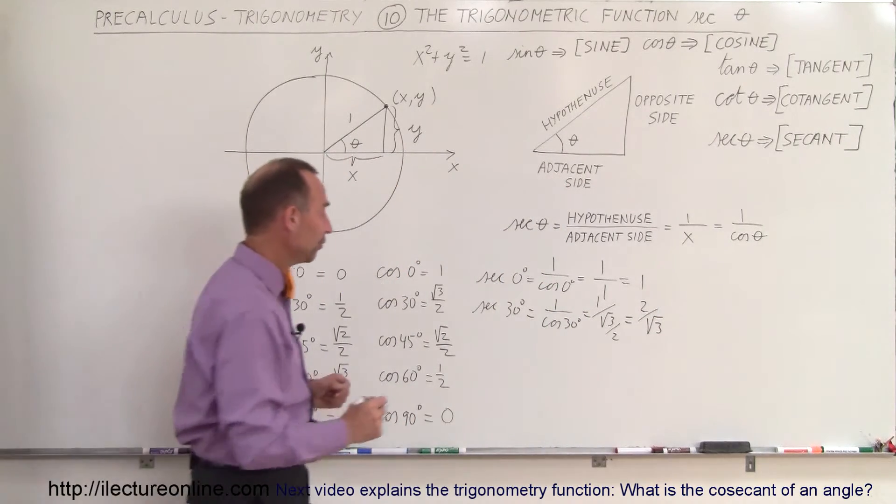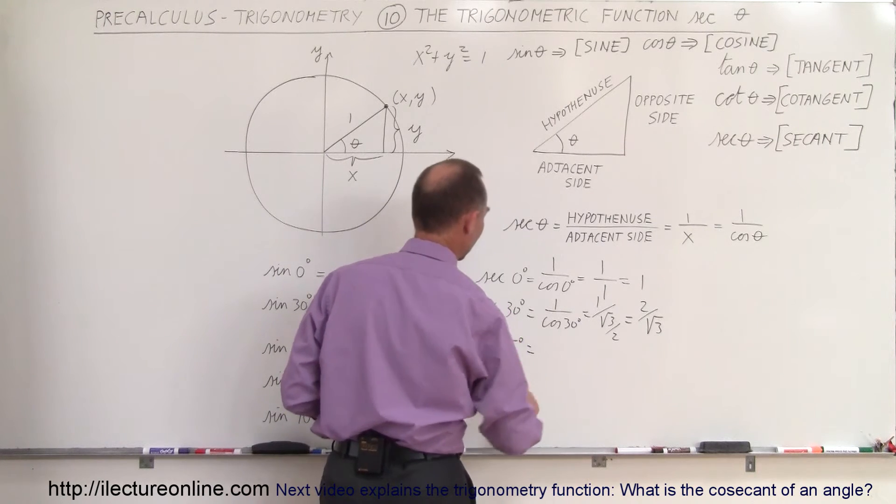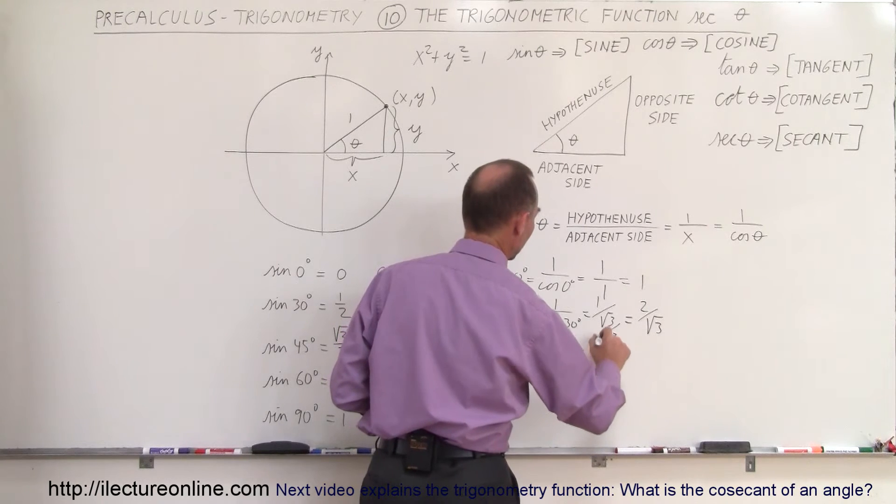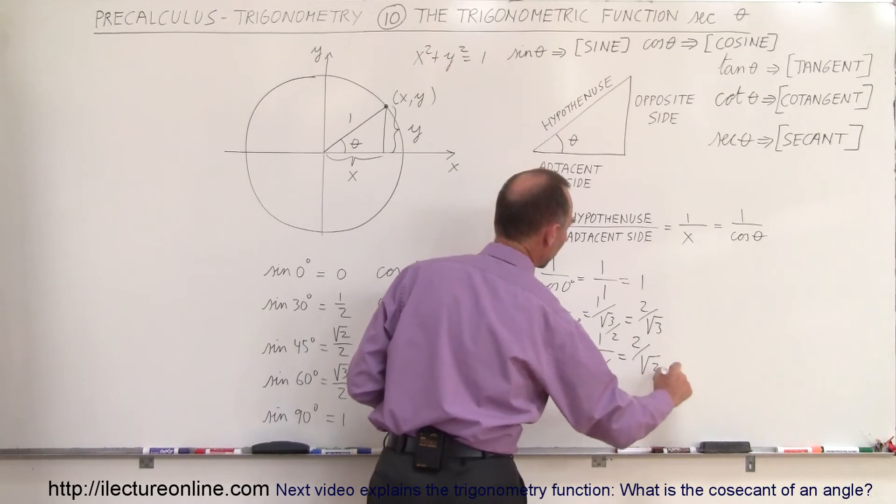What about the secant of 45 degrees? The secant of 45 degrees is equal to 1 over the cosine of 45 degrees, which is 1 divided by the square root of 2 over 2, which equals 2 divided by the square root of 2.